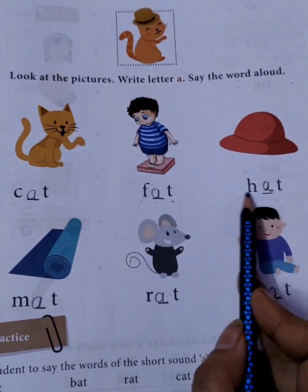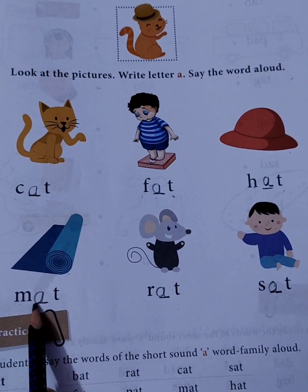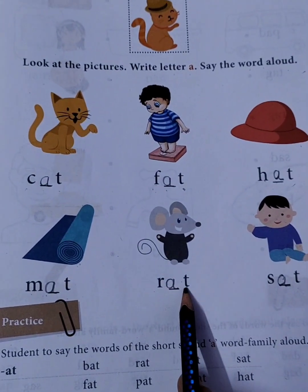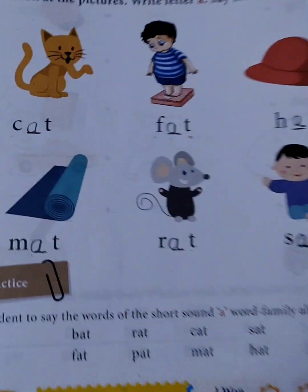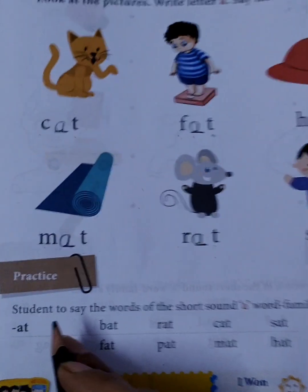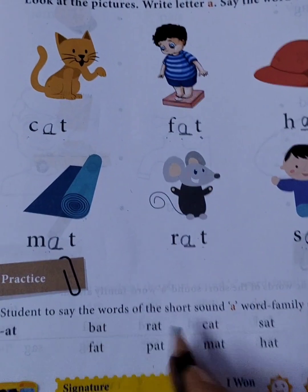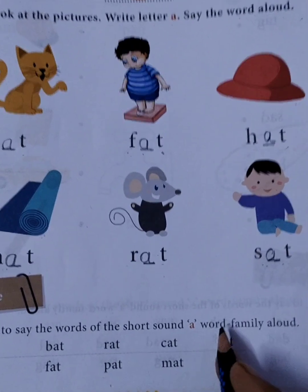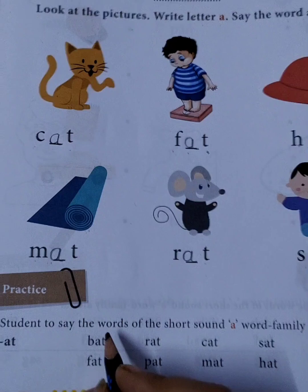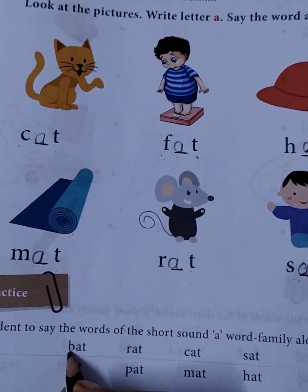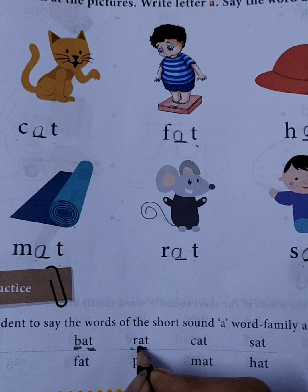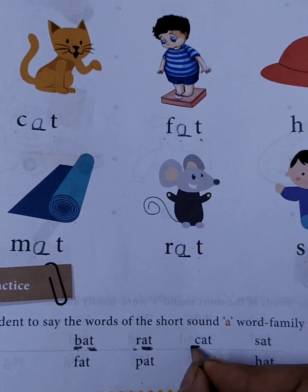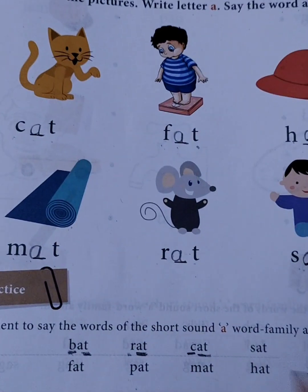C A T — cat. F A T — fat. H A T — hat. M A T — mat. R A T — rat. S A T — sat. Now students, let's read the words of the short sound A — the A family. B A T — bat. R A T — rat. K A T — cat.